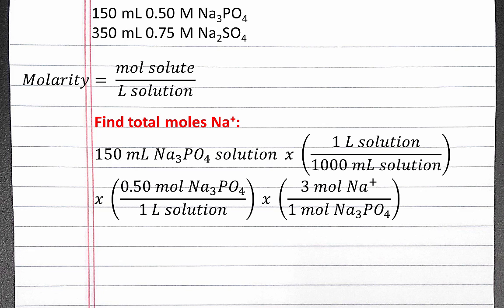We'll convert to liters of solution, and then from liters of solution, we can use molarity to convert to moles of sodium phosphate. Then using the formula unit, we can convert from moles of sodium phosphate into moles of sodium ions.